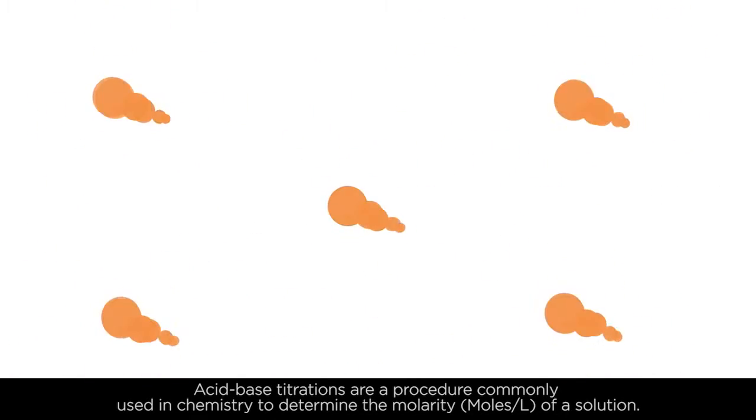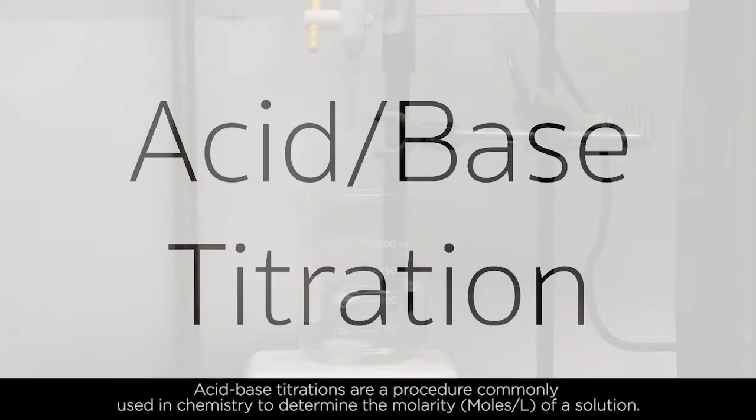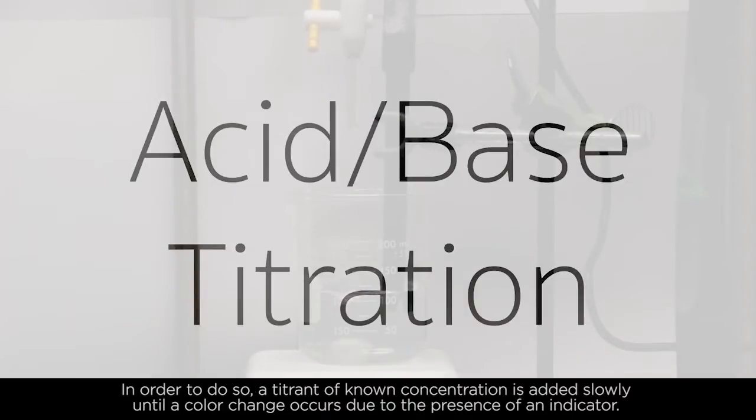Acid-base titrations are a procedure commonly used in chemistry to determine the molarity of a solution. In order to do so, a titrant of known concentration is added slowly until a color change occurs due to the presence of an indicator.